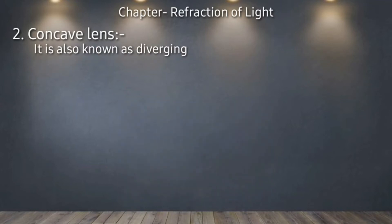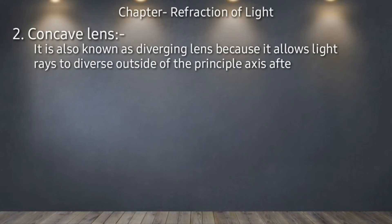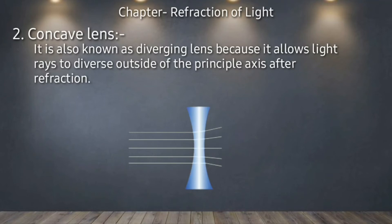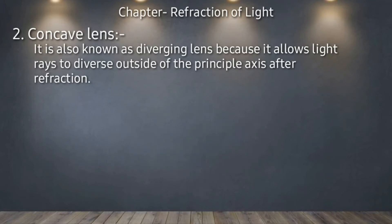A concave lens is also known as a diverging lens because it allows light rays to diverge outside of the principal axis after refraction. इसको diverging lens के नाम से भी जानते हैं क्योंकि जब इस पर light rays आकर fall होती हैं, तब ये इसको cross करने के बाद outer side की तरफ diverge हो जाती हैं। इस तरह के lens को diverging या concave lens भी कहा जाता है।